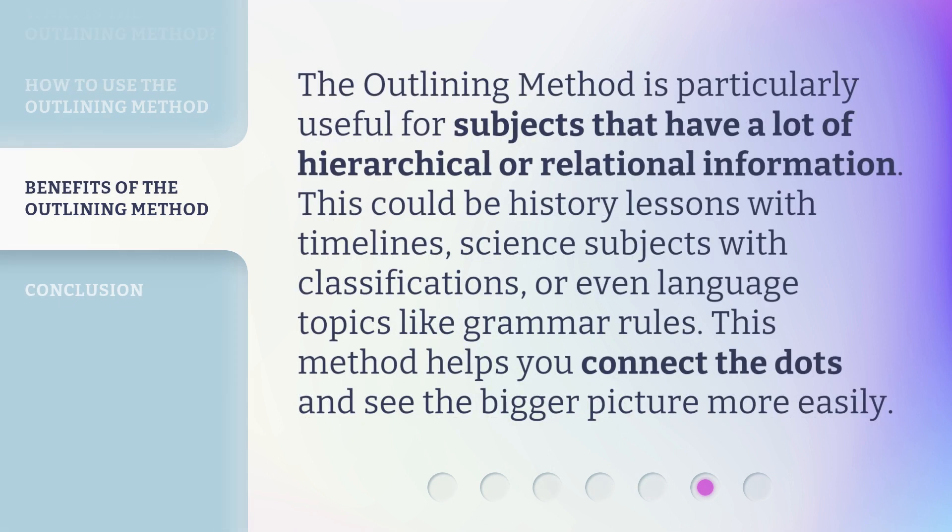Step 6: The outlining method is particularly useful for subjects that have a lot of hierarchical or relational information. This could be history lessons with timelines, science subjects with classifications, or even language topics like grammar rules. This method helps you connect the dots and see the bigger picture more easily.